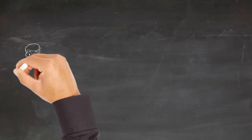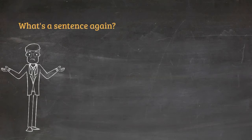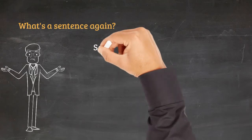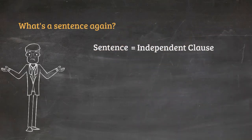Before we talk about sentence fragments, let's just review what a sentence is. This will make it easier to identify a sentence fragment. In technical terms, a sentence is called an independent clause. This just means that a complete sentence is able to stand by itself and that it has all the necessary parts within it.